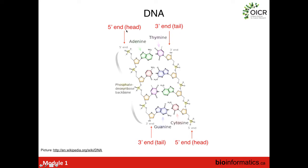So in this example, we read off an A, then a C, a T, and a G — the sequence of this DNA molecule from five prime to three prime is A, C, T, G.